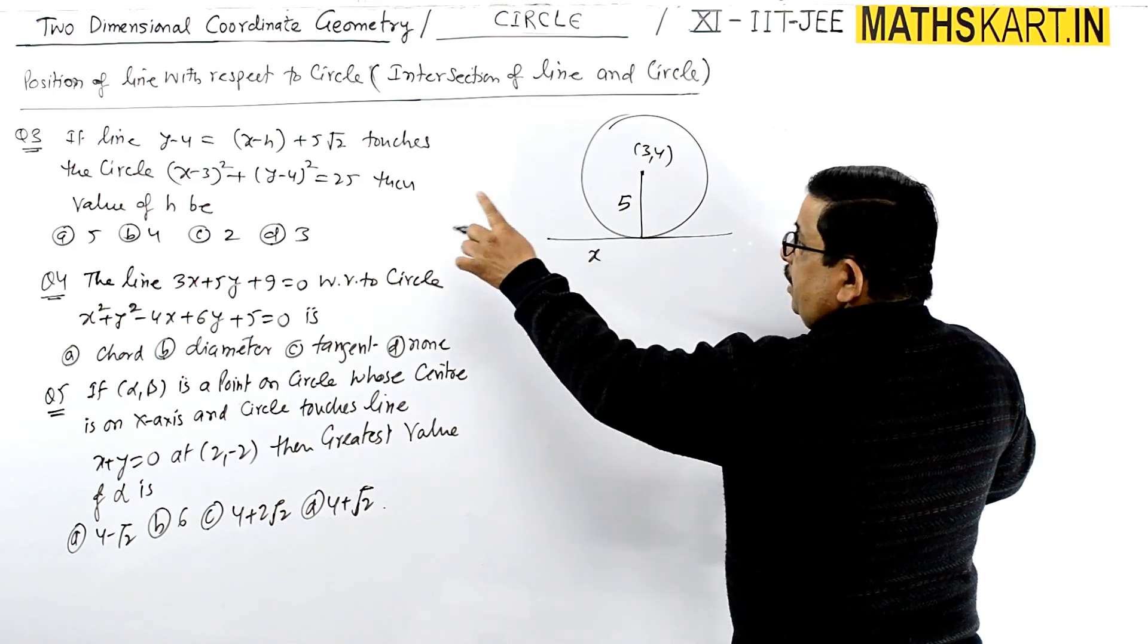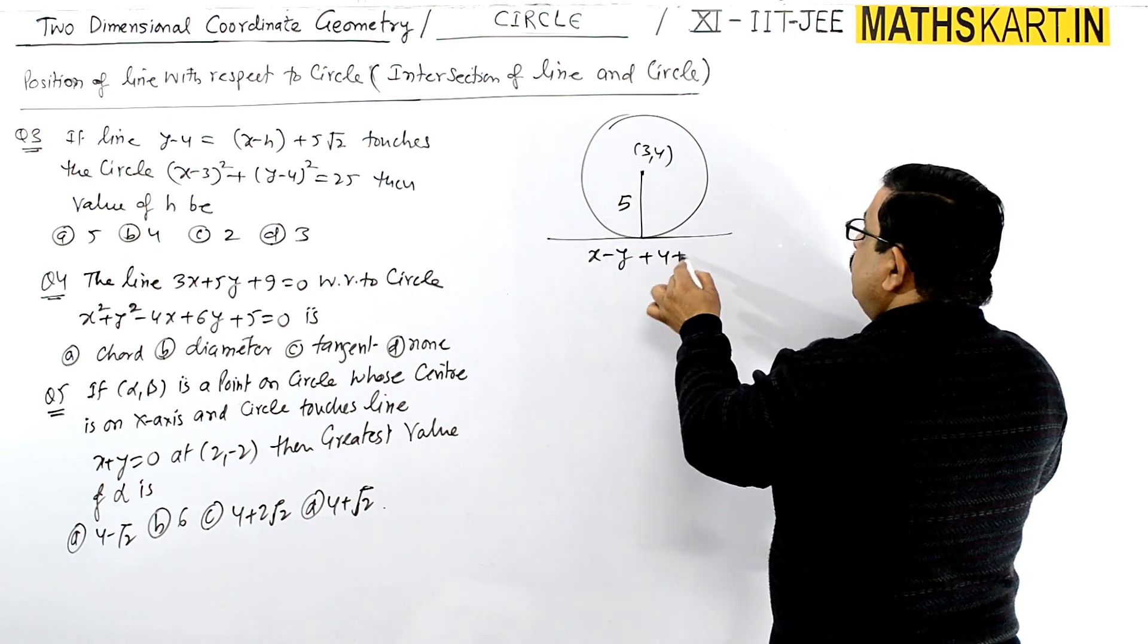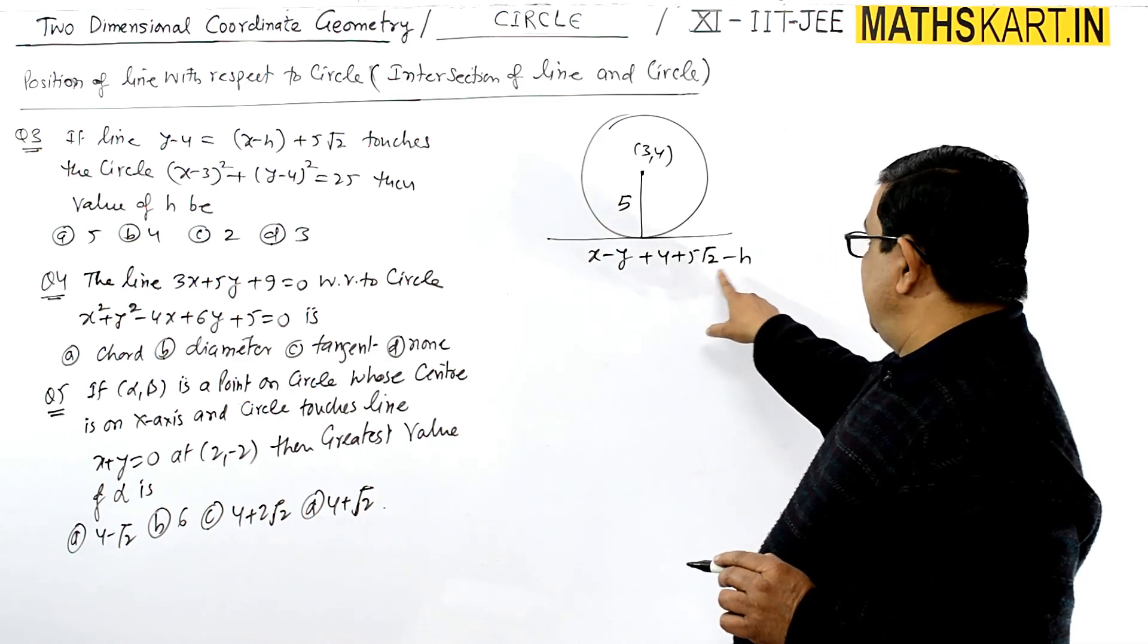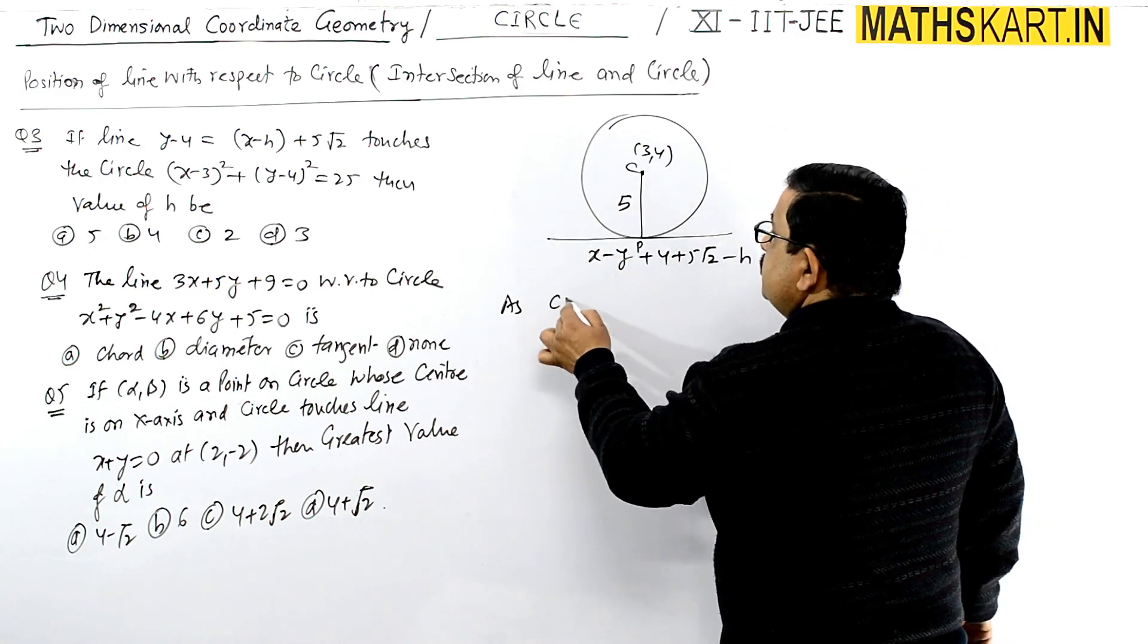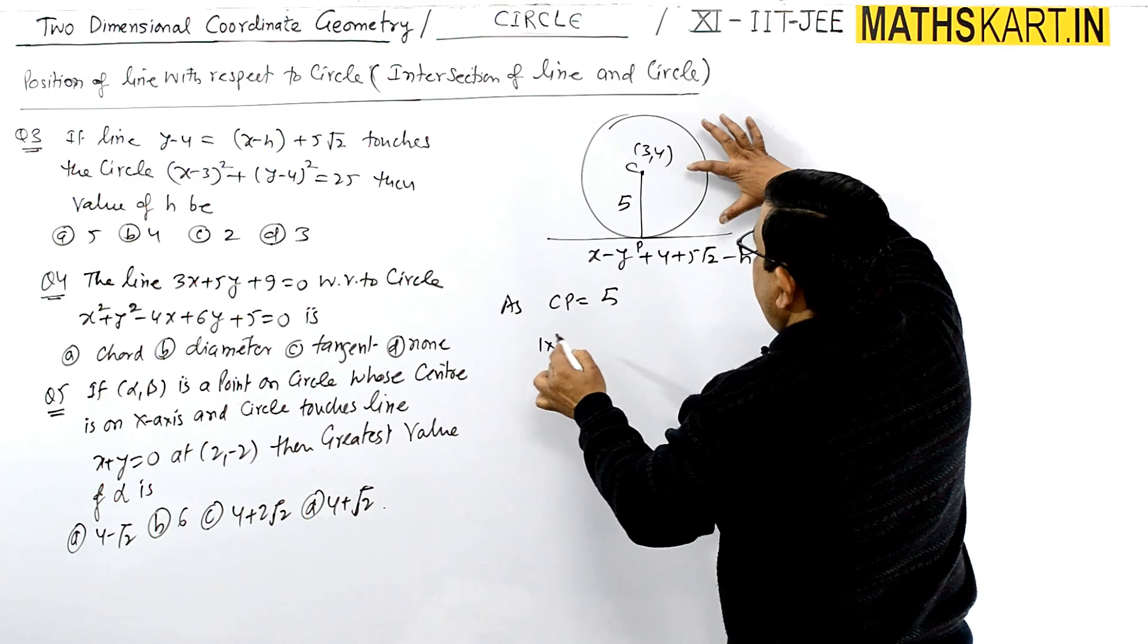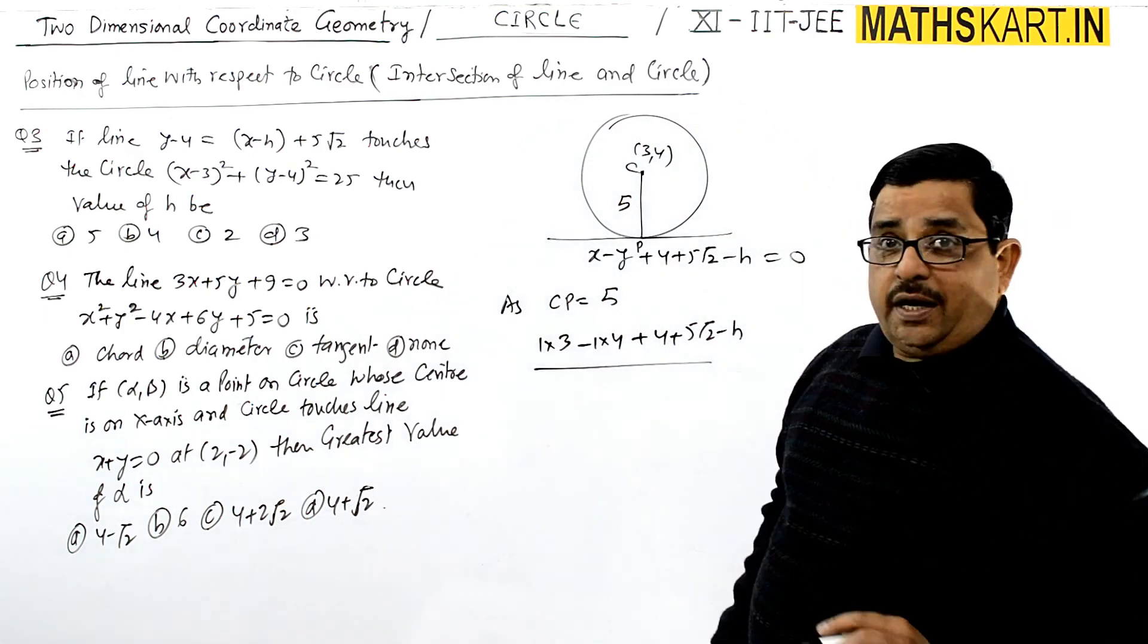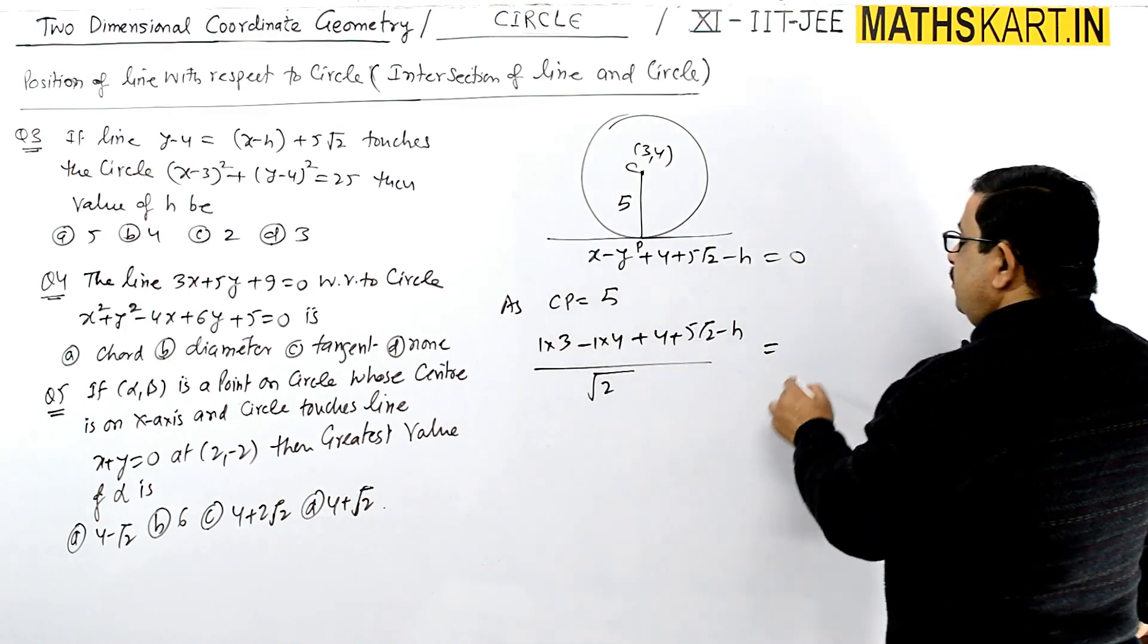So the center is (3, -4), the radius is 5. The line is x - y + 4 - 5√2 + h equals to 0. Now using the condition, from the center drop the perpendicular. So CP equals to 5. ax₁ is 3 plus by₁ which is -4 plus the constant 4 + 5√2 - h divided by √(a² + b²). So this equals √2, and this equals 5, which equals the radius of the circle.